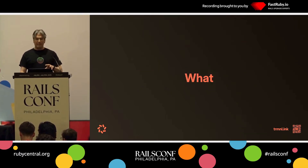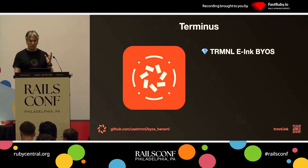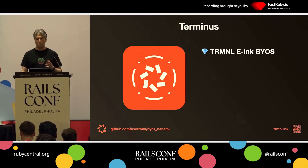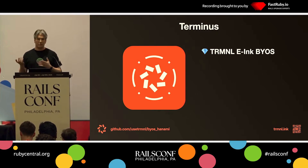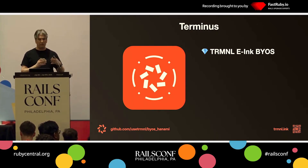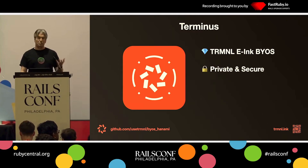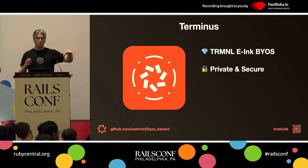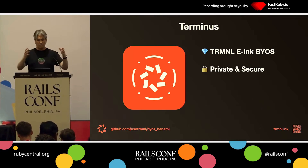So what is Terminus? Terminus is our open source solution. We call it BYOS — build your own server — and this is our reference implementation. You can have an open source solution to actually render data on these e-ink devices. It's private and secure by default, because you get to run the server locally, you have your device locally, it's all on your own network, so it's kind of a closed system.